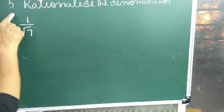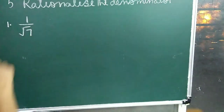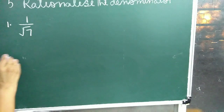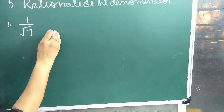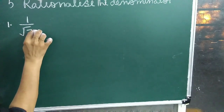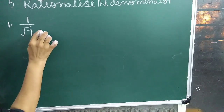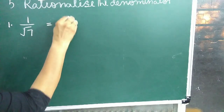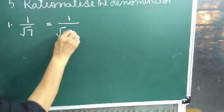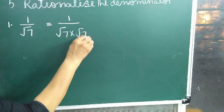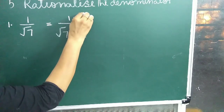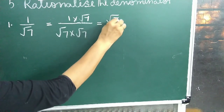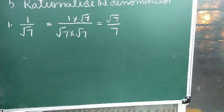Question number 5: Rationalize the denominator of the following. First question: 1 upon root 7. This can be rationalized by multiplying the denominator by its rationalizing factor, root 7. So 1 upon root 7 multiplied by root 7 upon root 7 gives root 7 upon 7.